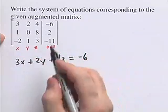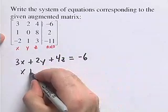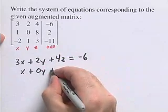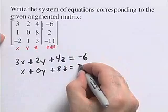In the second row here, we get the equation x plus 0y plus 8z equals 2.